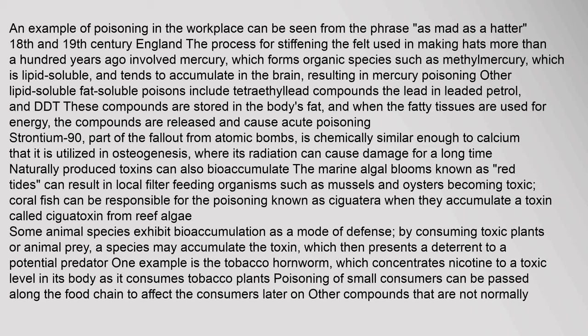When fatty tissues are used for energy, the compounds are released and cause acute poisoning. Strontium-90, part of the fallout from atomic bombs, is chemically similar enough to calcium that it is utilized in osteogenesis, where its radiation can cause damage for a long time. Naturally produced toxins can also bioaccumulate. Marine algal blooms known as red tides can result in local filter-feeding organisms such as mussels and oysters becoming toxic. Coral fish can be responsible for the poisoning known as ciguatera when they accumulate a toxin called ciguatoxin from reef algae.